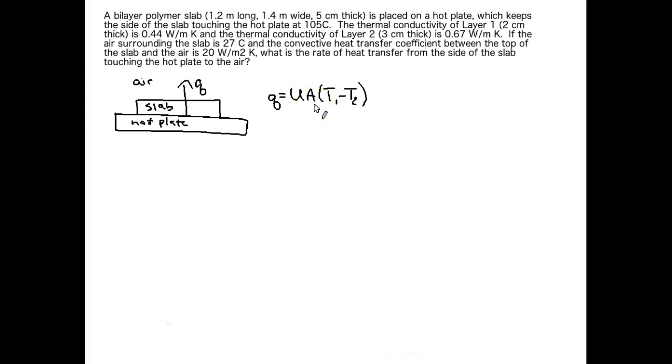A is the area our heat is being transferred through. Here because our heat transfer is in the direction of the thickness of the slab, our area is going to be the length times the width of that slab. Then we have our temperature difference. T1 is the side of the slab touching the plate, T2 is the side of the slab exposed to the air.